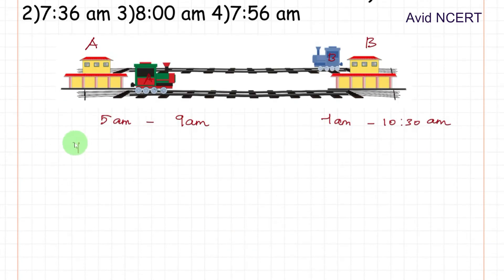From this, the time taken by train A equals 9 minus 5, which is 4 hours, whereas time taken by train B equals 7 to 10:30, which is 3 and a half hours or 3 1/2 hours. This can be converted into 7/2 hours.